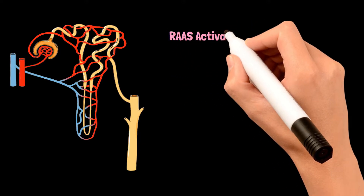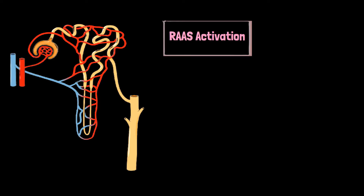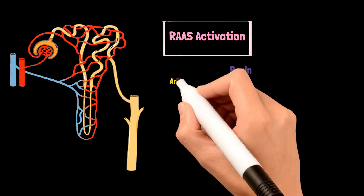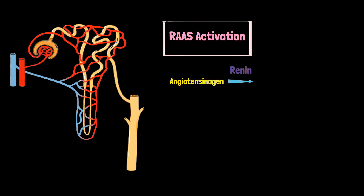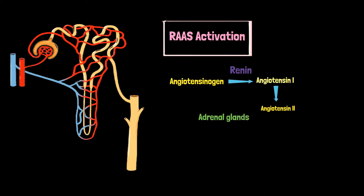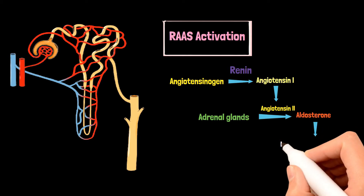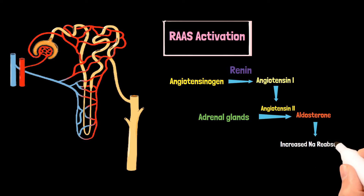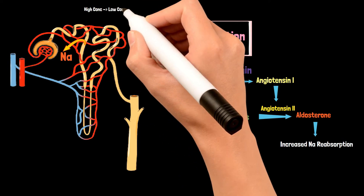Another thing that happens in this low perfusion state is the activation of the RAS, or the renin-angiotensin-aldosterone system. A hormone called renin in the kidney carries out the conversion of angiotensinogen into angiotensin 1. This angiotensin 1 is further converted to angiotensin 2, which is very important as it stimulates the secretion of a hormone called aldosterone from the adrenal glands. Aldosterone ultimately increases sodium reabsorption in the nephron, meaning it tries to conserve sodium.